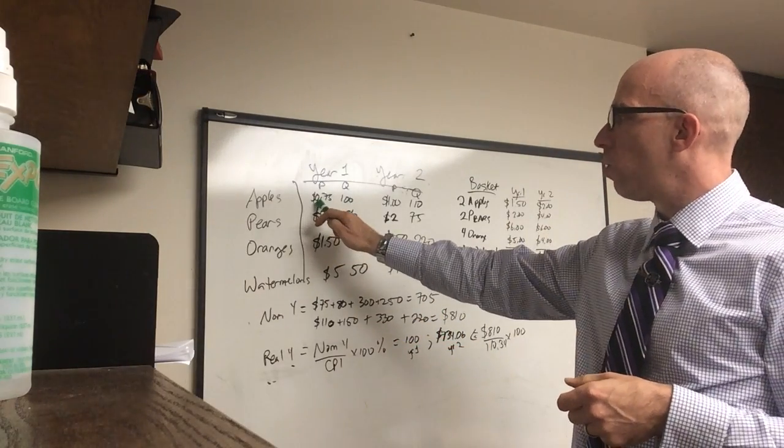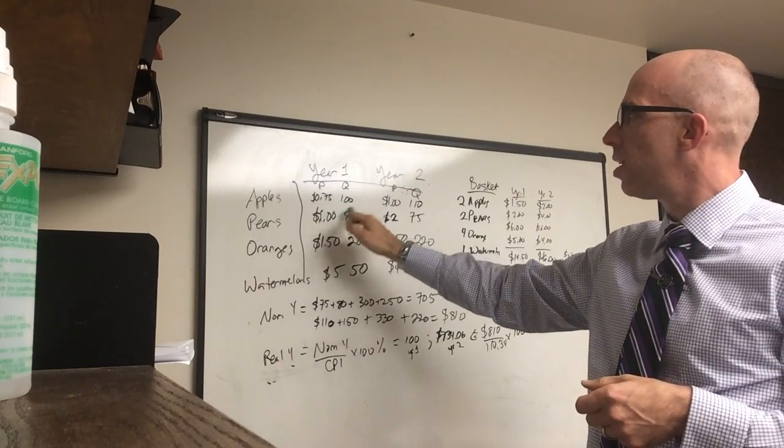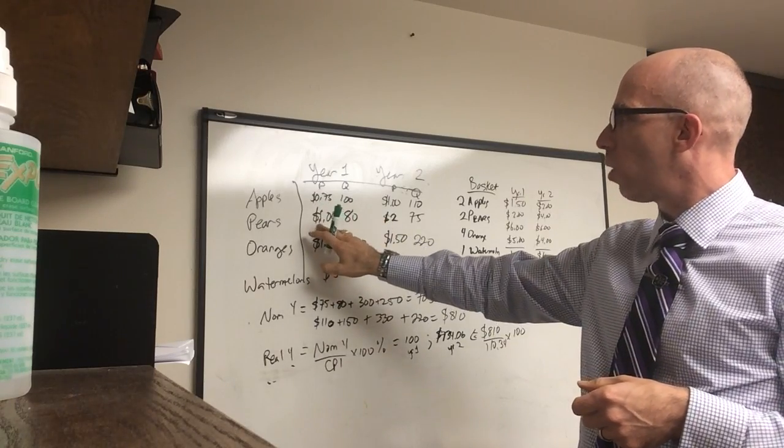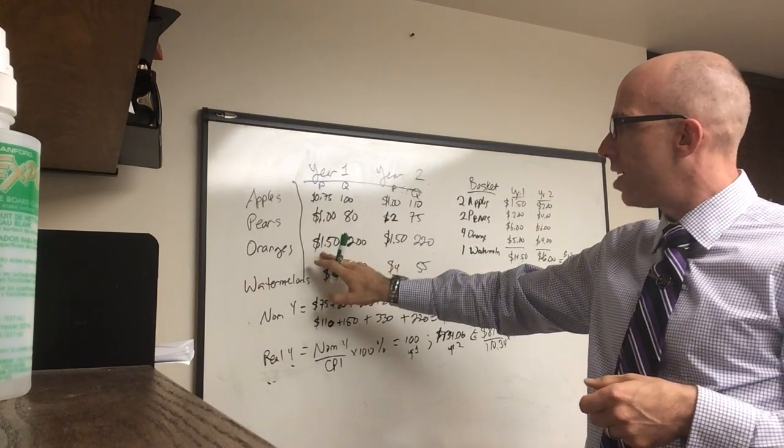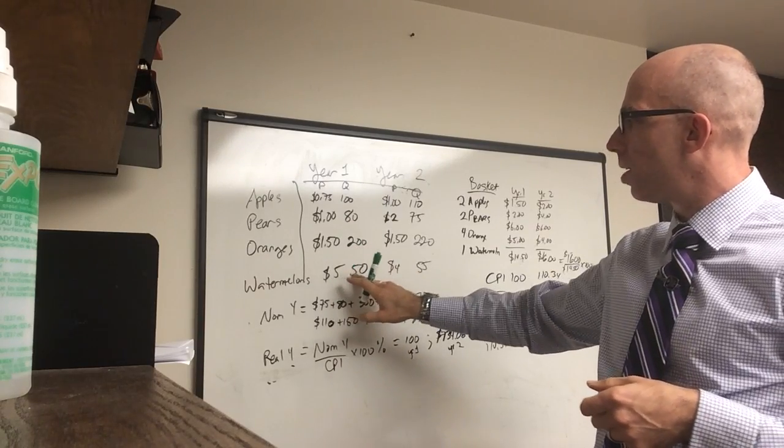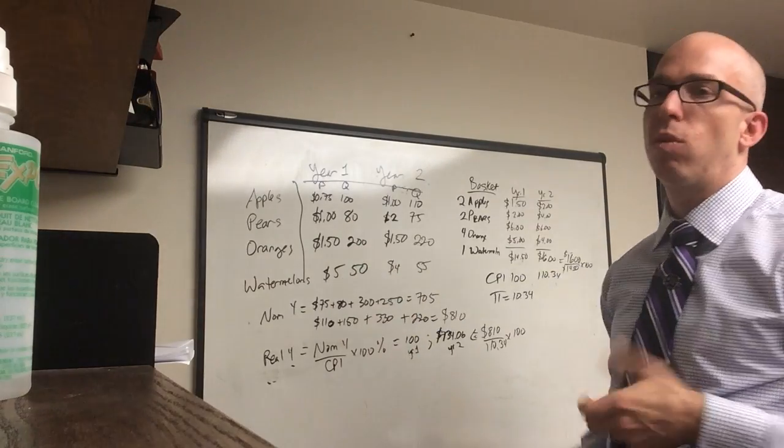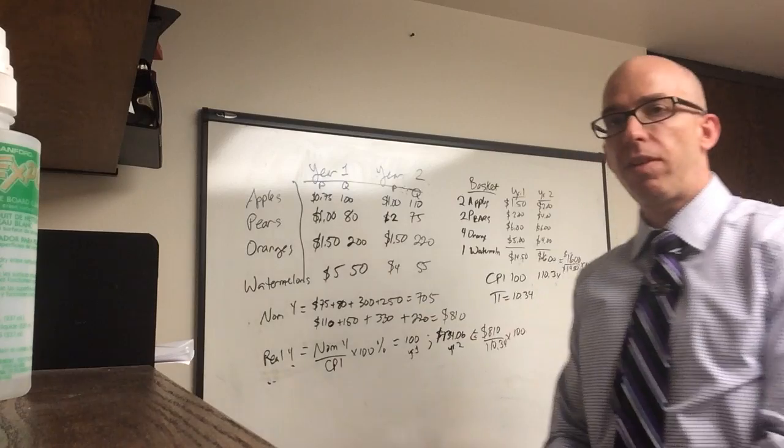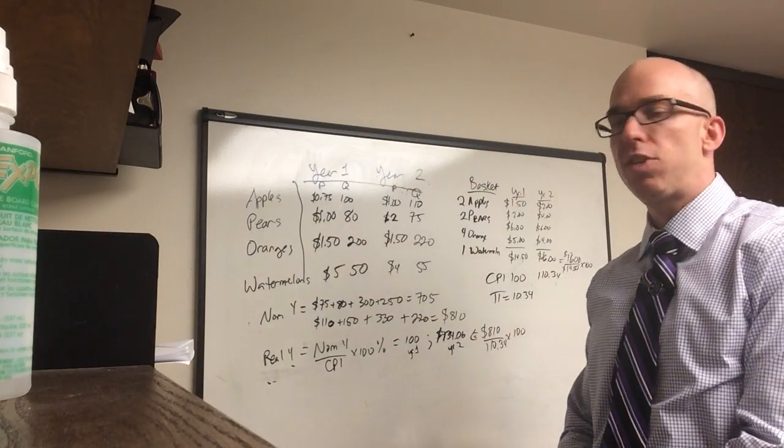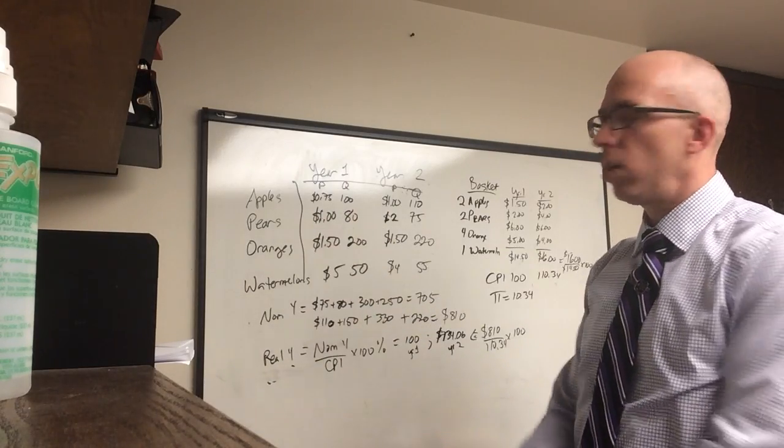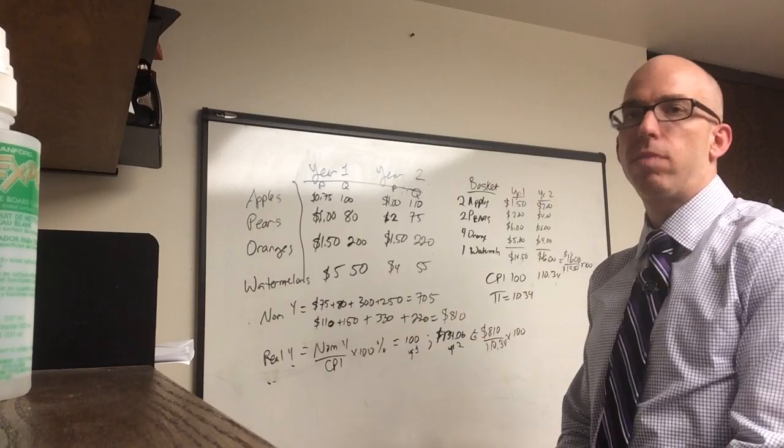So I've got apples in year one, 75 cents. I've got 100 of them. Pears are $1, and I have 80. $1.50 in orange times 200, and $5 watermelons for 50 of them. So 50 watermelons for $5 each. Clearly, watermelons are more important than apples, and you can imagine why one's much larger.